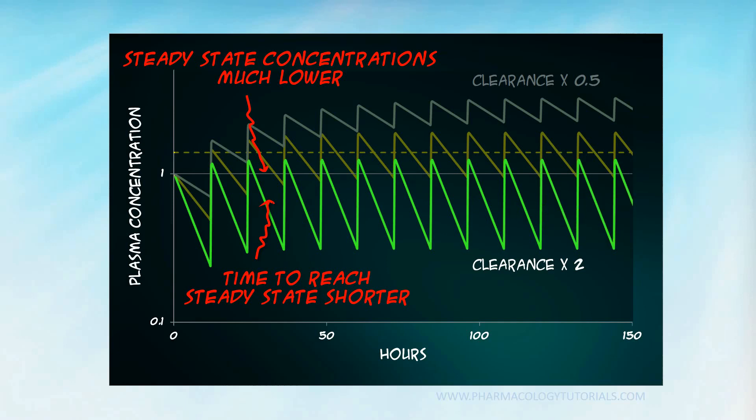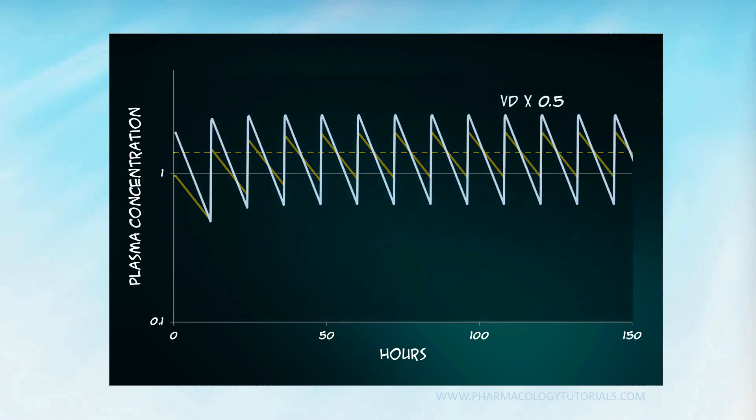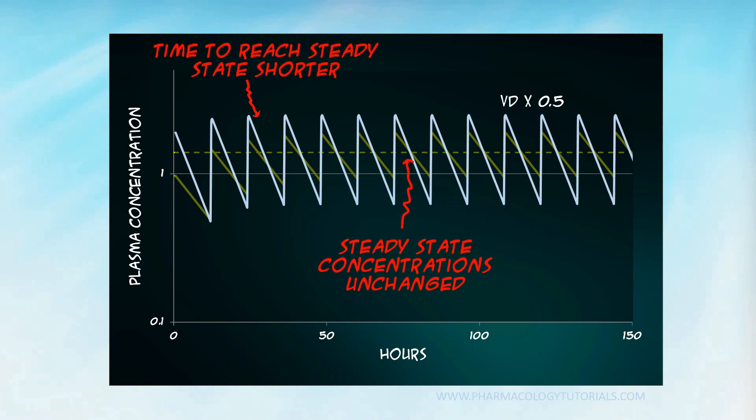What happens when the volume of distribution changes instead? Here you can see that if the volume of distribution decreases, the half-life is shorter. And steady state occurs earlier. But note that the AUC is unchanged.